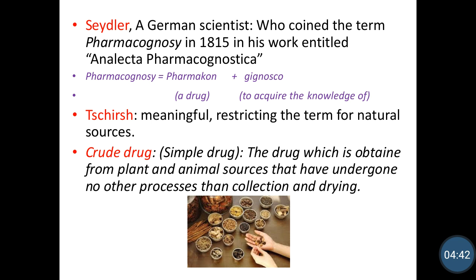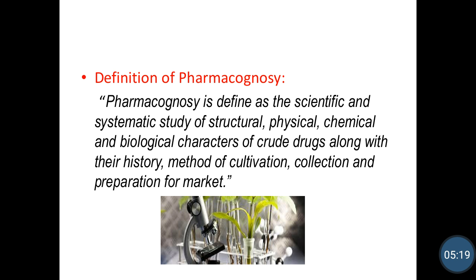After that, research gave a more meaningful and restricted term for natural sources only. The definition of crude drug arose: a crude drug is a simple drug — the drug which is obtained from plant and animal sources that has undergone no other process than collection and drying is known as a crude drug. On the basis of all this history, finally the definition of Pharmacognosy arose. Pharmacognosy is defined as the scientific and systematic study of structural, physical, chemical, and biological characters of crude drugs along with their history, method of cultivation, collection, and preparation for market.